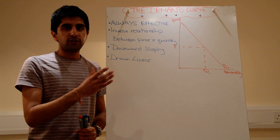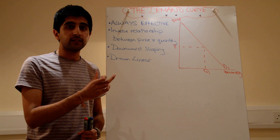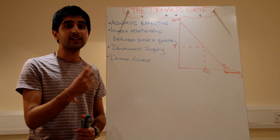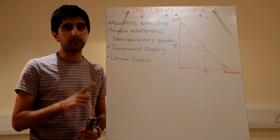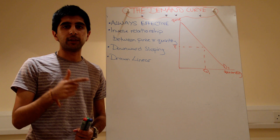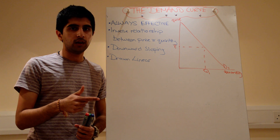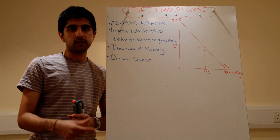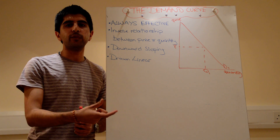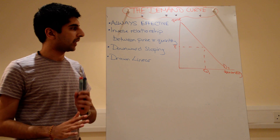There is an inverse relationship between price and quantity demanded. This makes logical sense — this is the law of demand. When the price goes up, we want less of something; quantity demanded goes down. When the price goes down, something becomes cheaper; we want more of it. Quantity demanded goes up. Very simple law of demand.